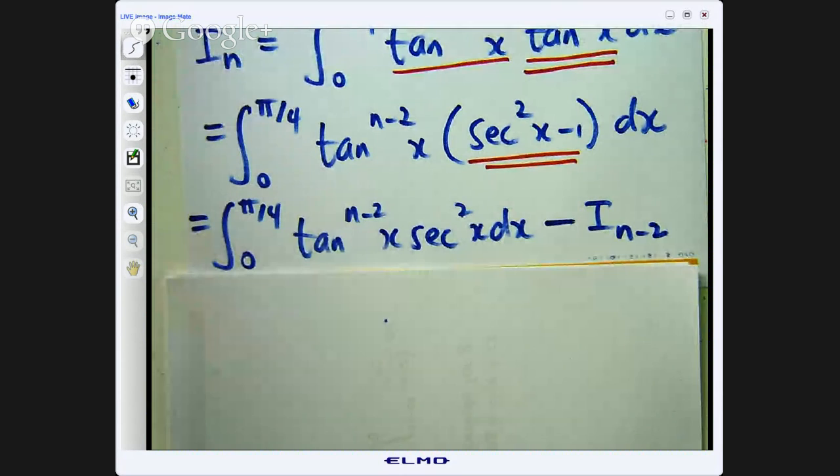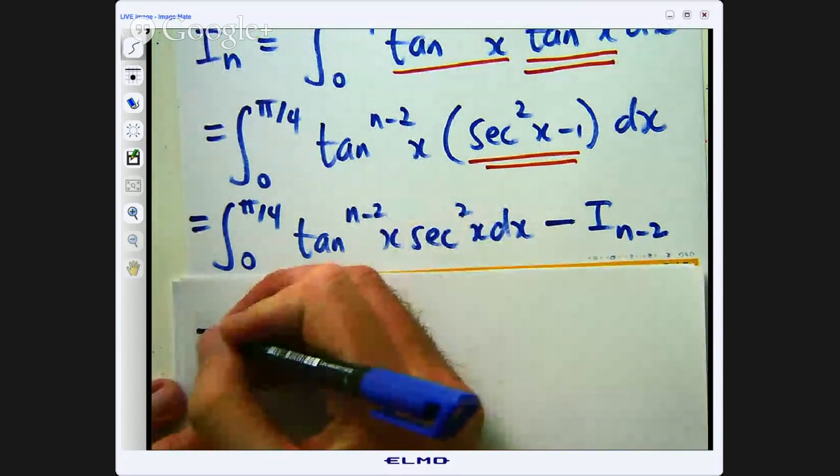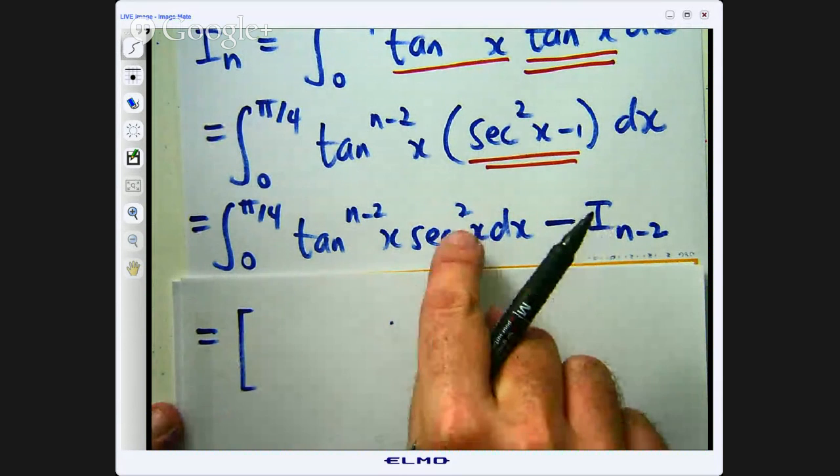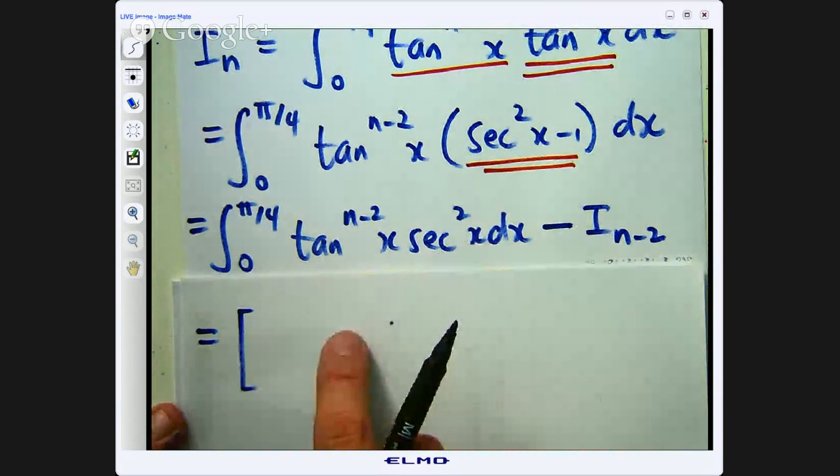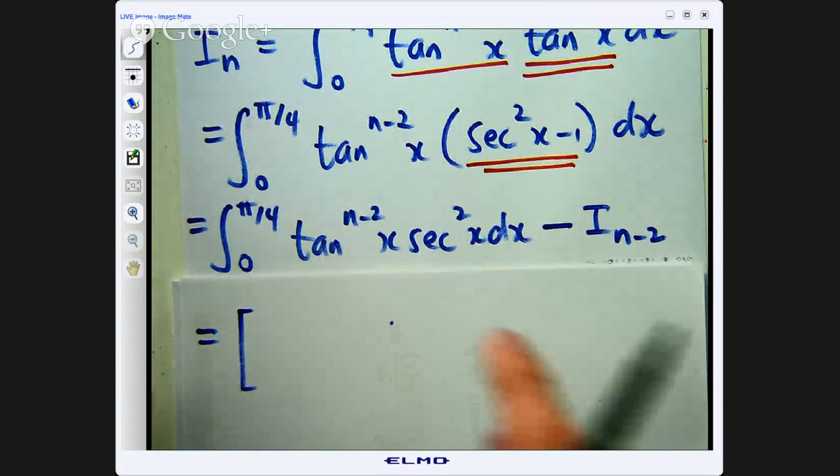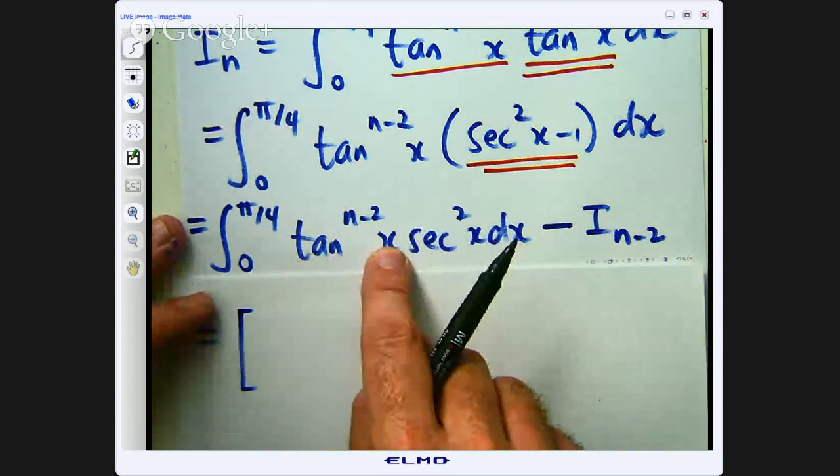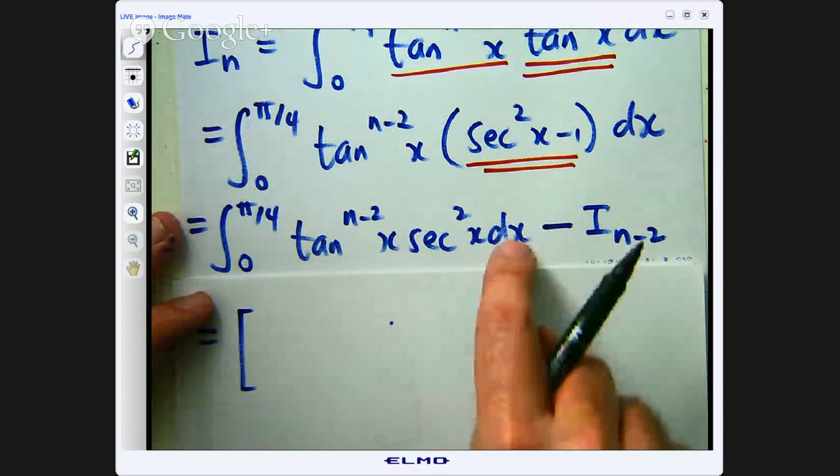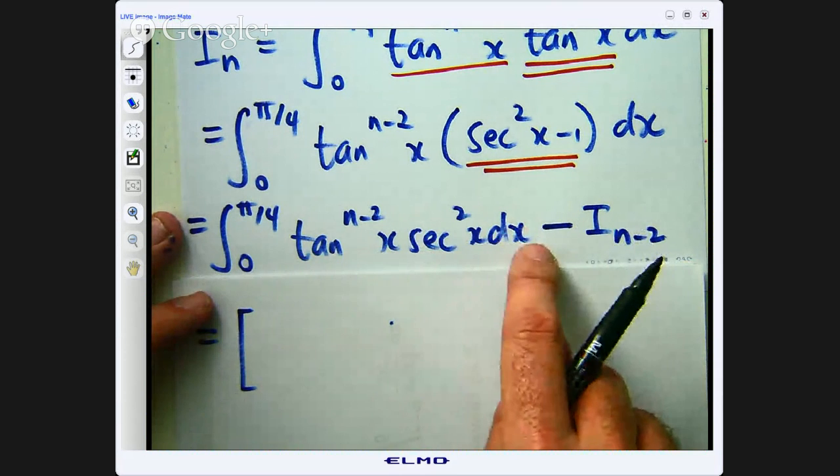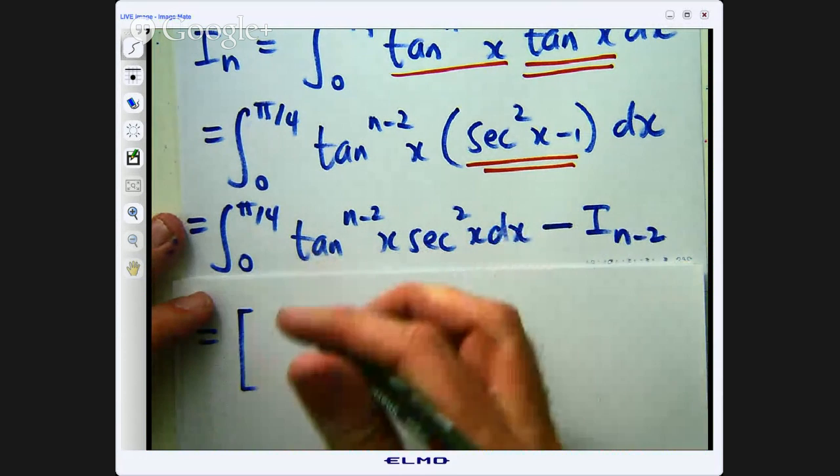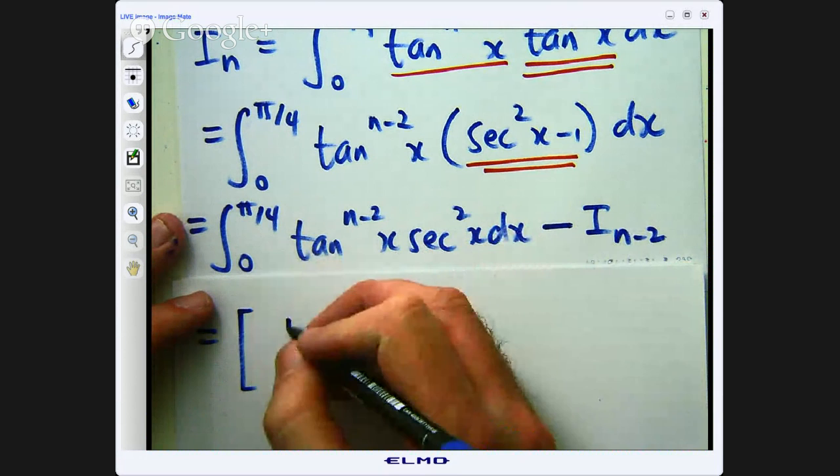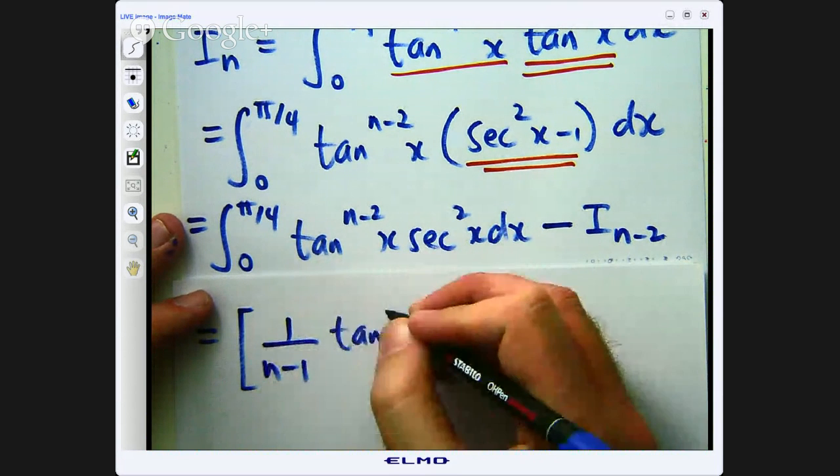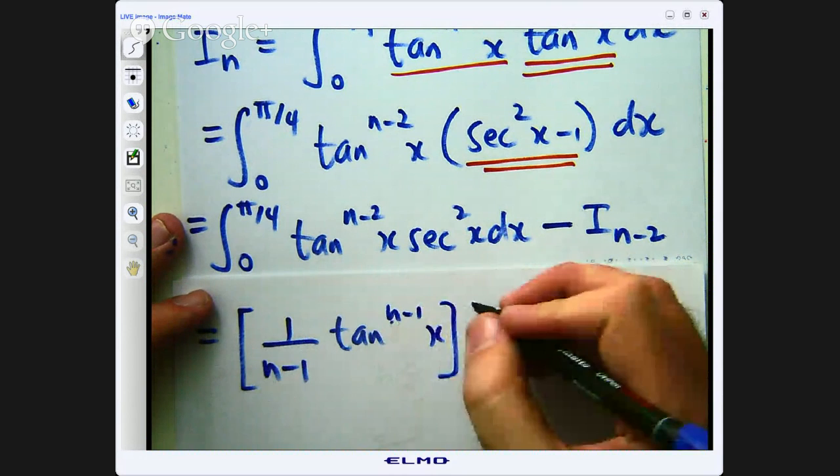This integral here is the following. We know that sec squared is the derivative of tan, so if I make a substitution u equals tan x, I know du is going to be sec squared dx. I will come back to this, so do not worry if you do not understand this step completely.